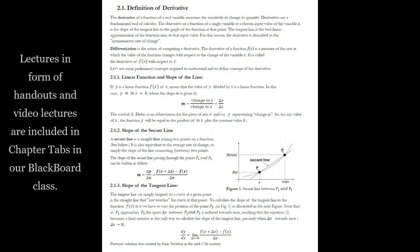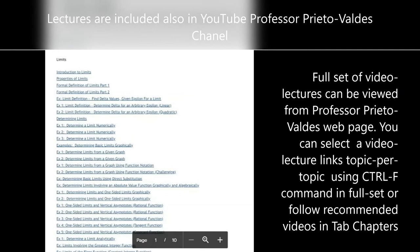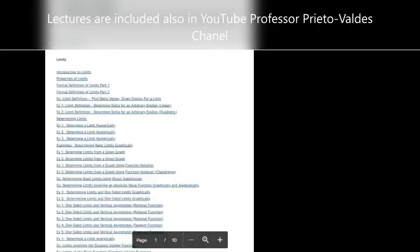Other materials. The following learning materials are included in our Blackboard class portal. Lectures in form of handouts and video lectures are included in chapter tabs in our Blackboard class. Full set of video lectures can be viewed from Professor Prieto-Valdes web page or you can follow selected topic per topic video lectures as included in chapter tabs. You can search using Ctrl F command in full set or follow recommended videos in tab chapters.